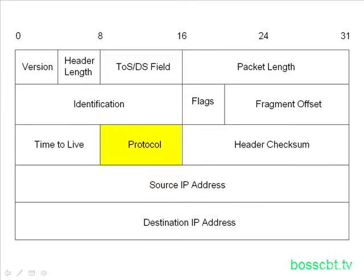After that is the protocol field — a fairly simple field. It enables the IP header to identify what is in its data. Usually that's just a number, and that number corresponds to another protocol. For instance, it could signify TCP or UDP. It's telling whoever's receiving it: 'I'm an IP packet, and I'm carrying this protocol — TCP, for example.'